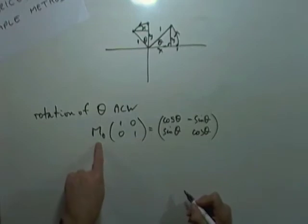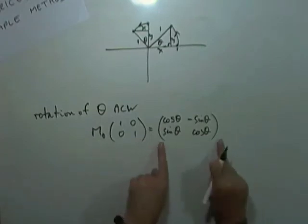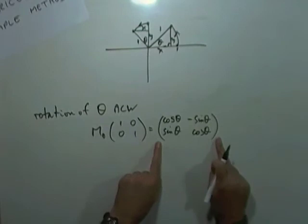The matrix associated with a rotation of theta anticlockwise is this. It doesn't take long to derive it if you don't remember it. But it's maybe the only one you would try to remember.